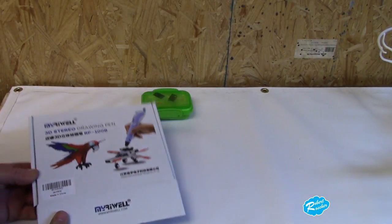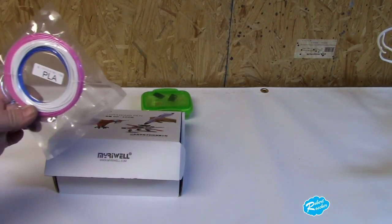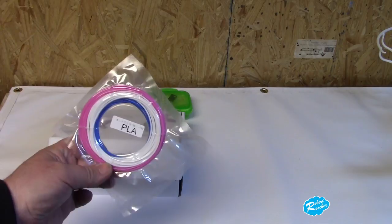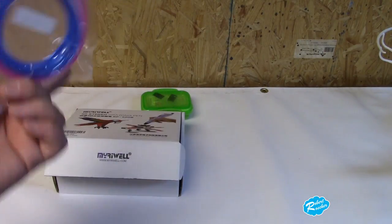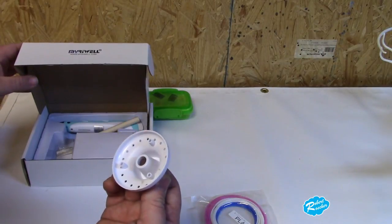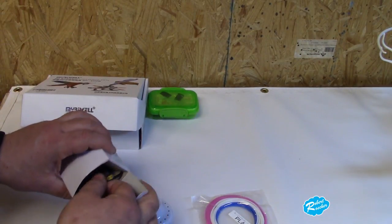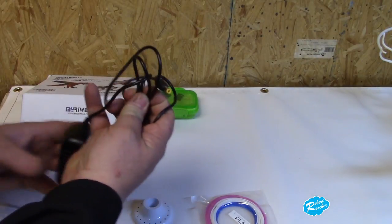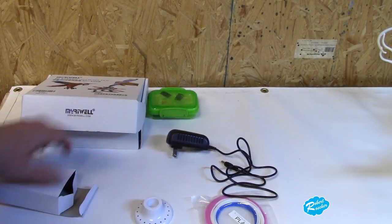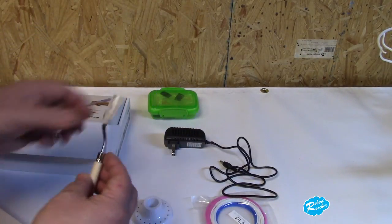So after I open up the box, it comes with a three pack of PLA. This one's pink, blue, and white colors. It comes with a stand. It comes with a power supply. It comes with one of those spatulas.